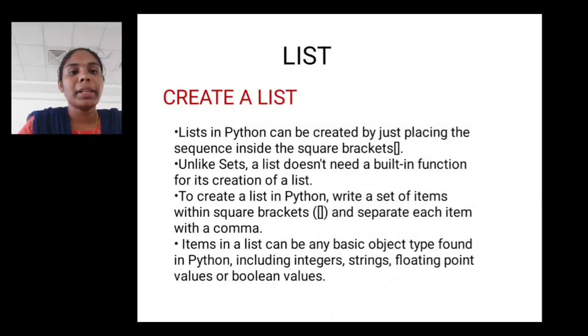Create a list. Lists in Python can be created by just placing the sequence inside the square brackets. Unlike sets, a list does not need a built-in function for its creation. To create a list in Python, write a set of items within square brackets and separate each item with a comma. Items in a list can be any basic object type found in Python, including integers, strings, floating-point values, or boolean values.